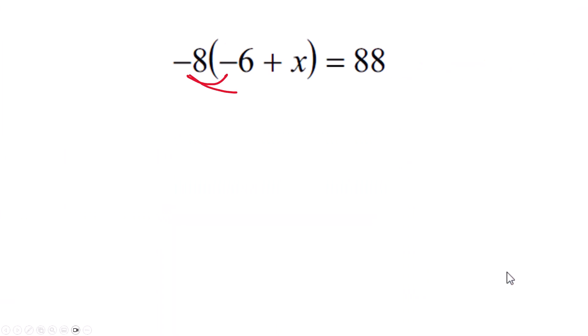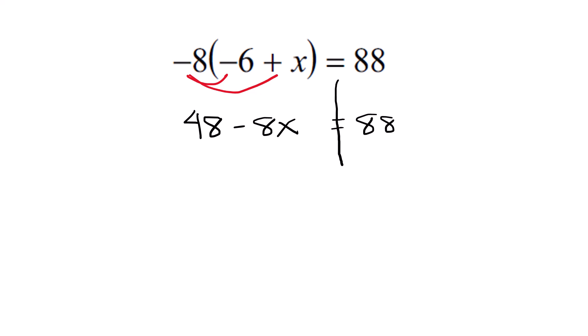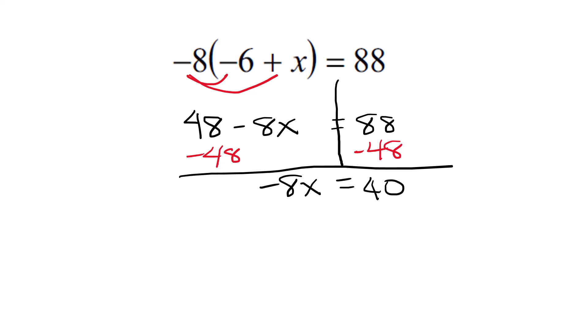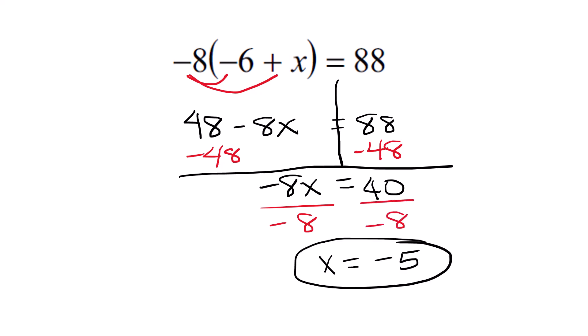Distributive property on one side: negative 8 times 6 is positive 48, and negative 8 times x is negative 8x. The 88 is just sitting over there — we haven't touched it yet. You look for the side that has too many things on it, and we should zoom in on that 48. You don't want to play with the x yet — you want the x by itself. We have negative 8x equals 40, so now just divide by negative 8. x equals negative 5.